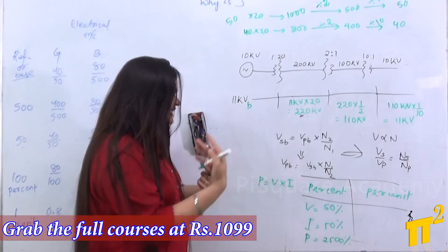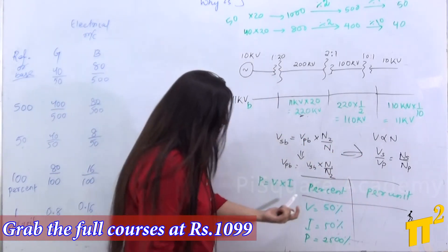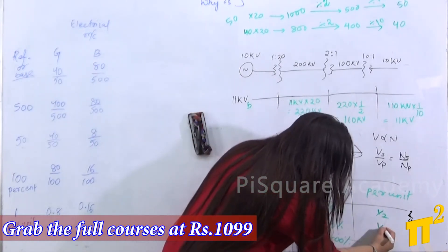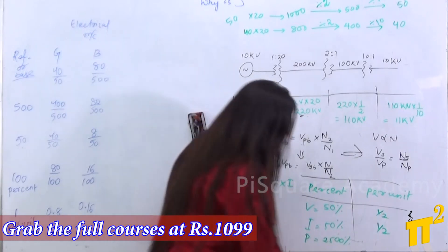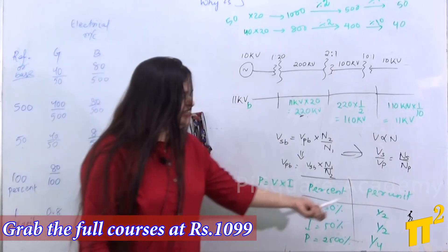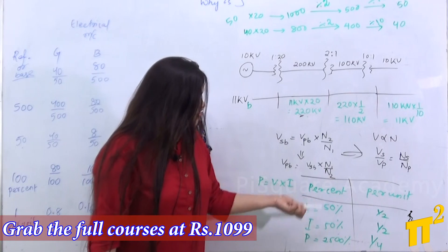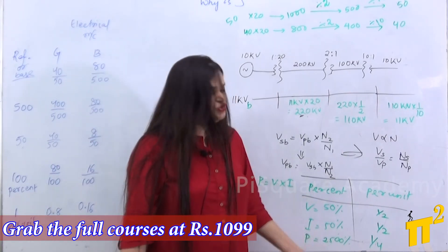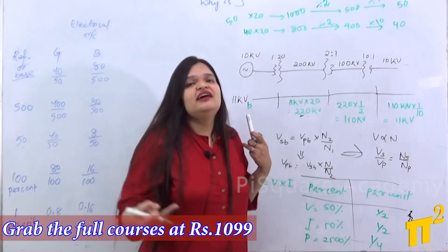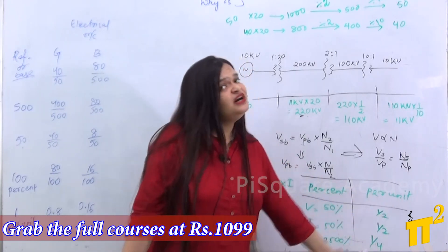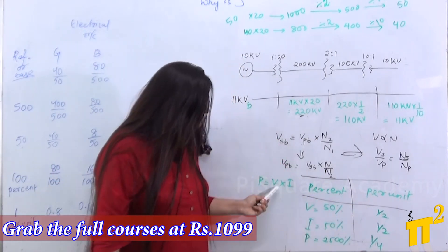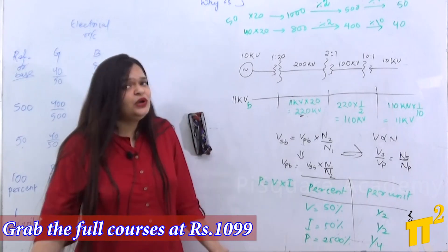But when I take it in per unit: voltage is reduced by half (0.5 pu), current is reduced by half (0.5 pu), and when I multiply both, power is reduced by one-fourth (0.25 pu). You can see the difference clearly. In percent, the product gives 2500 percent and you must divide by 100 again to get the result. In per unit, you simply multiply 1/2 × 1/2 = 1/4 — no extra division or multiplication needed.